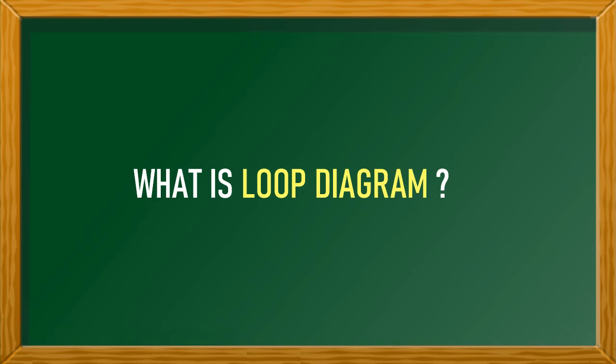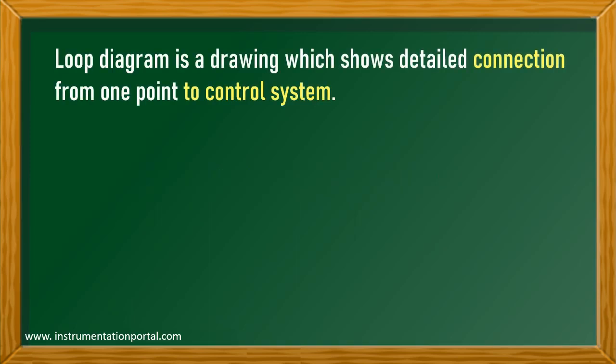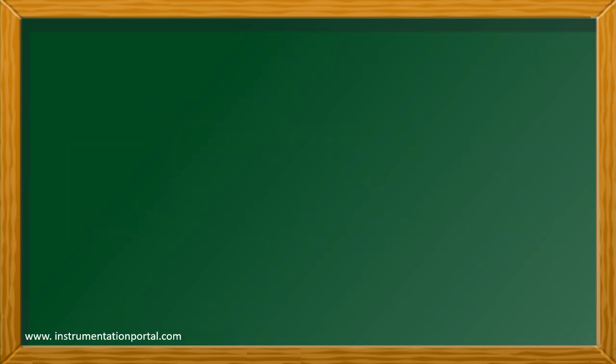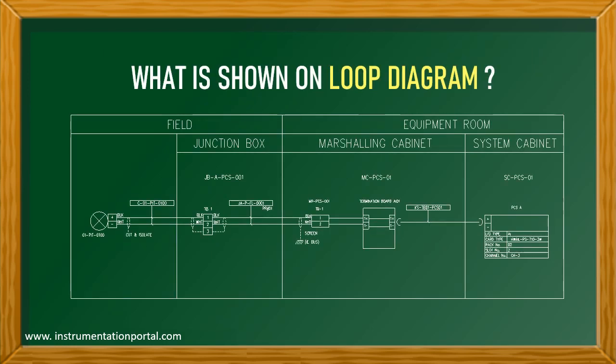What is a loop drawing, also named loop diagram? A loop diagram is a drawing which shows detailed connection from one point to control system. Here are what's shown in the loop diagram.